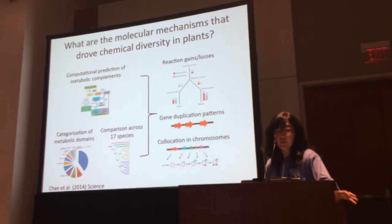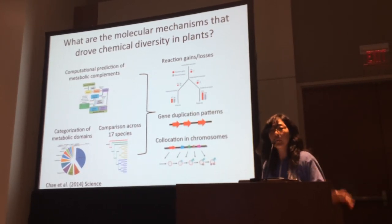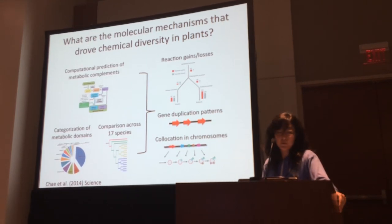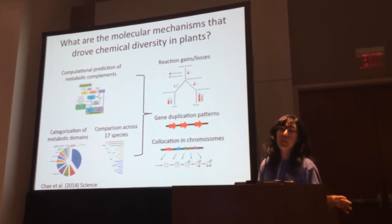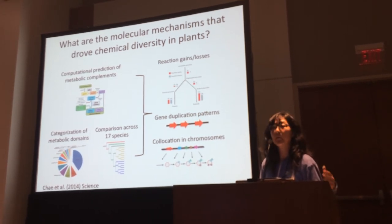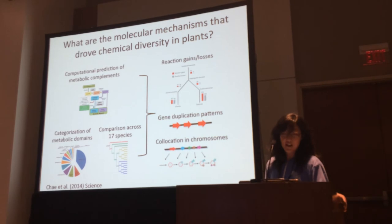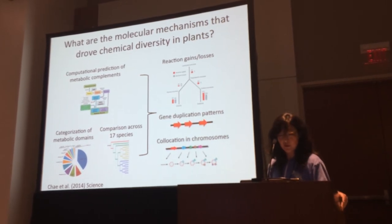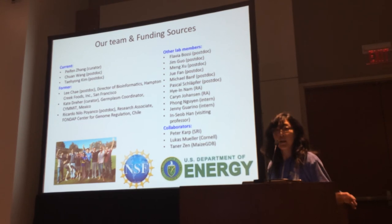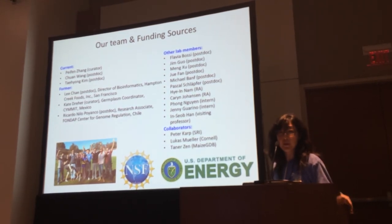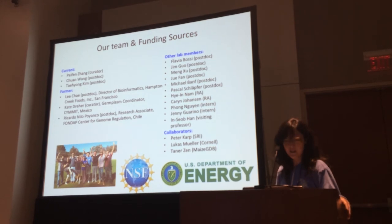In summary, we've developed a computational pipeline to generate metabolic complements from any sequenced plant genome — and the pipeline can be applied to non-plant genomes as well. We've compared these pathways across species and found patterns of mechanisms that might explain how metabolic pathways evolved. There are many more interesting evolutionary questions we're excited to explore further. This project was carried out by several talented postdocs and curators, half of whom now have independent positions, along with other lab members and key collaborators. The project was funded by NSF and DOE.